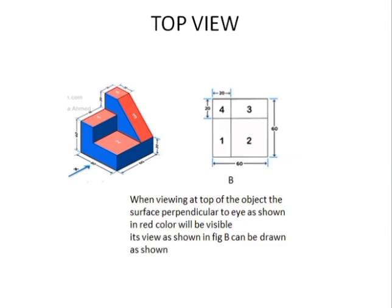Then we have to draw the top view. When looking from the top, the red colored image will be visible to the eye — these are the surfaces perpendicular to the eye. The orthographic projection of the top view shows the surfaces perpendicular to the eye as highlighted in red. This image view will be the orthographic view.